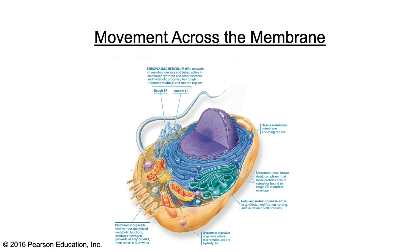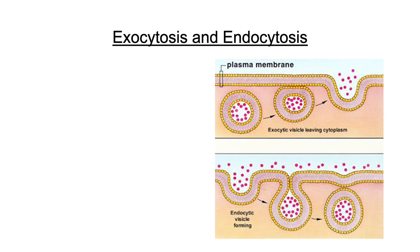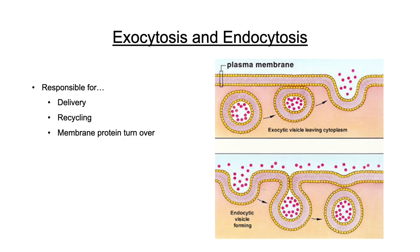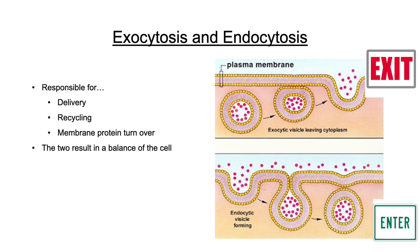The final part of the endomembrane system to cover is the movement of synthesized proteins across the membrane. Exocytosis and endocytosis are responsible for delivery, recycling, and membrane protein turnover — together they maintain a balance of the cell by moving things both in and out. A helpful mnemonic: exocytosis starts with 'ex,' like the exit sign — it means exiting the cell. Similarly, endocytosis starts with 'en' like entering — the contents of vesicles are entering the cell.